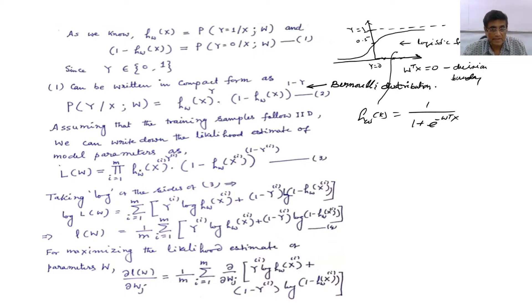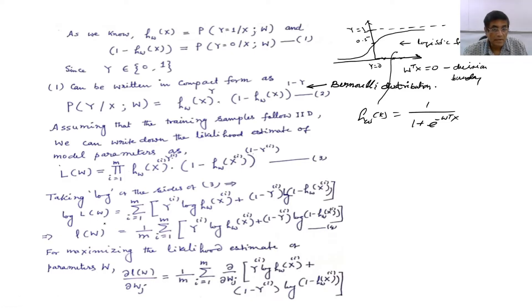We take the log of both sides, so then the multiplication sign becomes a summation sign, because log converts multiplication to summation. We get: sum of y_i * log(h_w(x_i)) + (1 - y_i) * log(1 - h(x_i; w)). We call this log-likelihood l(w), and this is equal to this expression.